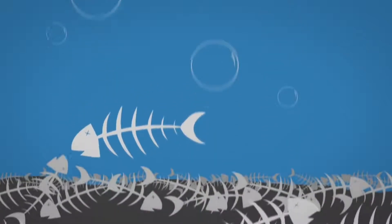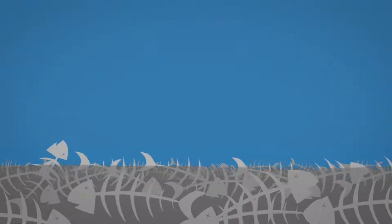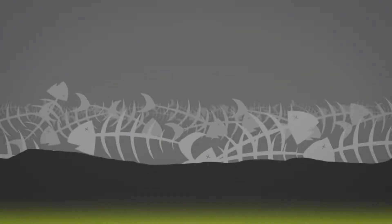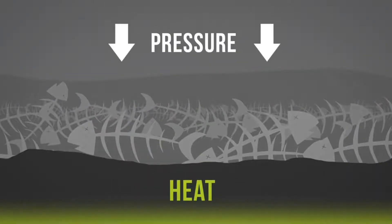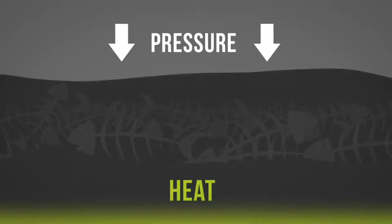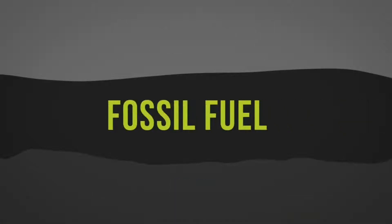Today's oil deposits were formed millions of years ago when dead marine organisms sunk to the bottom of the ocean bed and were buried under deposits of sedimentary rock. After subjection to intense heat and pressure, these organisms underwent a transformation process by which they were converted to oil over millions of years. This is why you may have heard oil referred to as a fossil fuel.